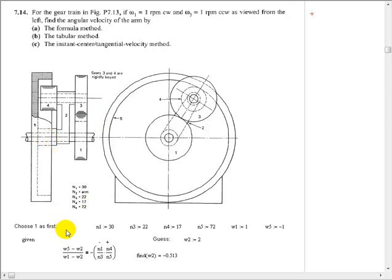Data as given in the problem was teeth numbers. Number 1 is 30, 3 is 22, 4 is 17, 5 is 72 teeth. We're told that omega-1 has a value of 1. I'm going to arbitrarily declare that positive. And then omega-5, which was given as 1 in the opposite direction, I will then declare that as negative. And if our answer comes out positive, it's in the same direction as this gear. If our answer comes out negative, it'll be in the same direction of this gear, and the opposite of this gear.